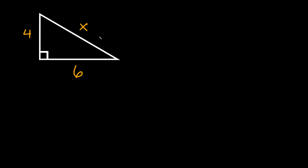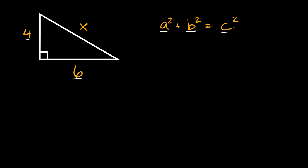To find the missing side of a right triangle we can use the Pythagorean theorem, which is a squared plus b squared is equal to c squared. So a and b are the two shorter sides — in this case that would be four and six — and c is the length of the hypotenuse, which is labeled as x.